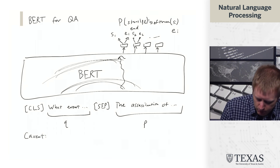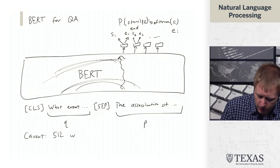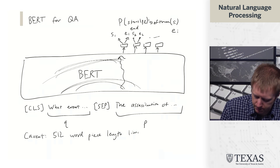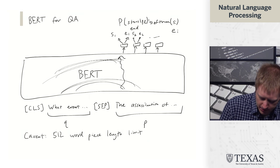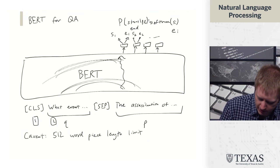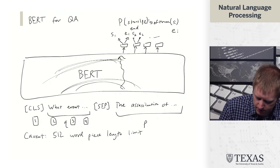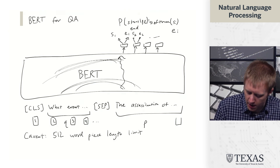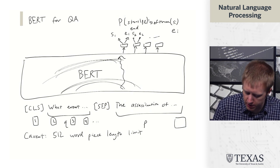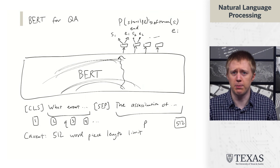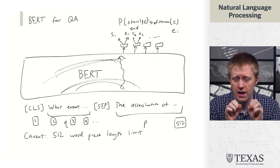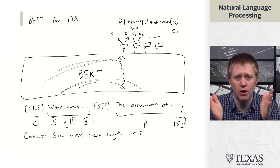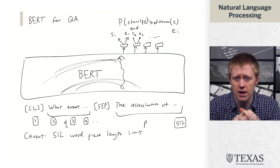There is a big caveat: the 512 word piece length limit. BERT has positional embeddings which look like vectors for each integer in the input, and BERT is pre-trained on passages of up to size 512. It uses word piece segmentation rather than actual words, so you don't even get a full 512 words — you get something less.